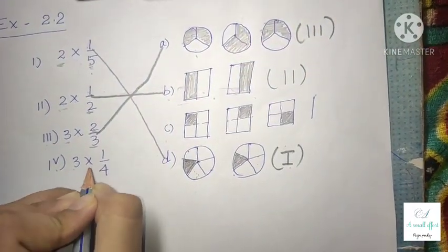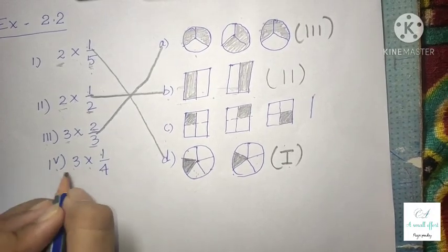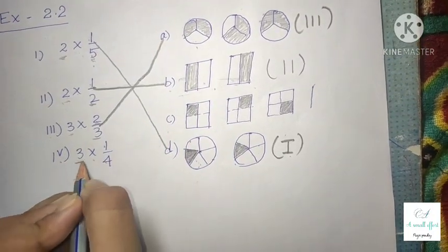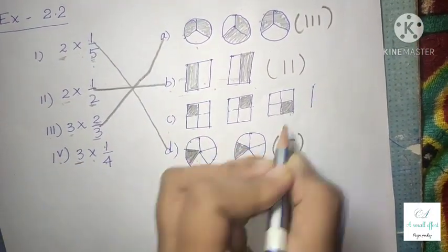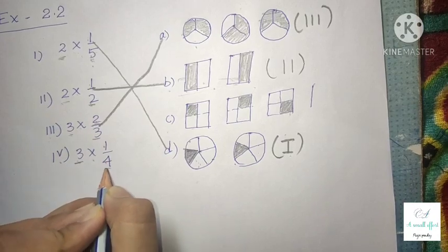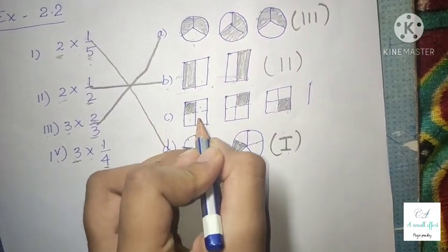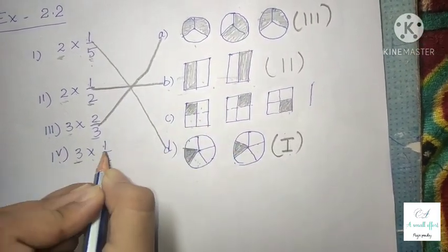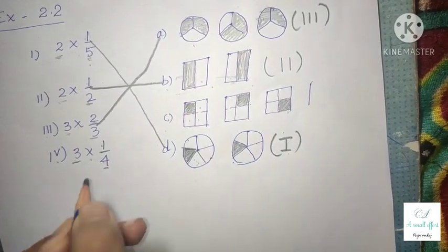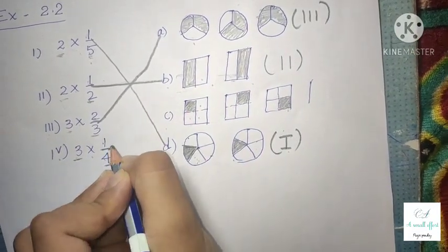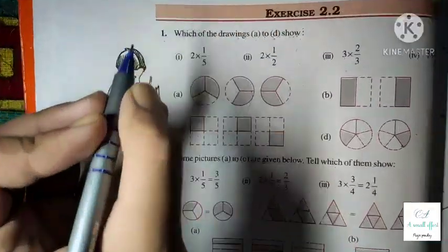Option 4 is 3 × 1/4. The option should have 3 figures. The denominator is 4, meaning 4 parts should be there, and the numerator is 1, meaning 1 part should be shaded. So option 4 is matched with option A.